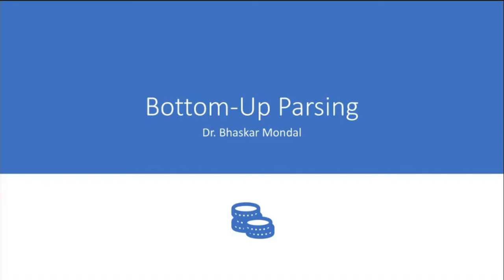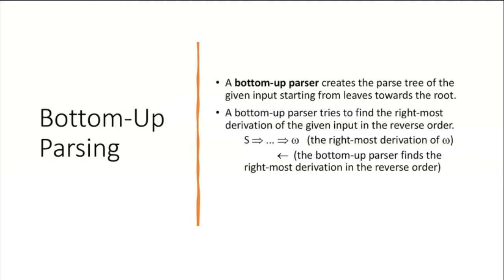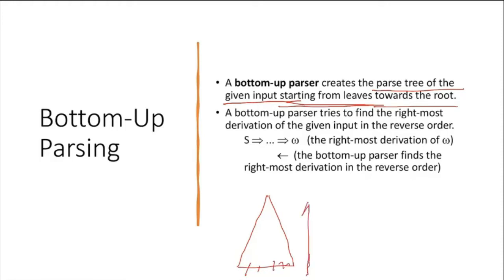Today we discuss bottom-up parsing techniques. A bottom-up parser creates the parse tree of the given input string starting from the leaves towards the root. So if your tree looks like this, it starts from the leaves and grows in this direction towards the root. Previously, we were generating derivation trees from root to leaves — that was a top-down approach — but now we'll do it in reverse order, following a bottom-up approach.